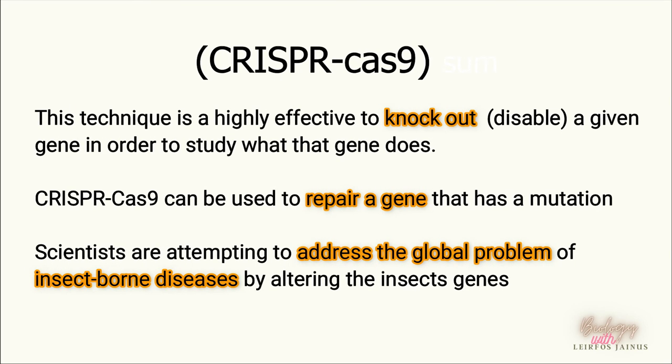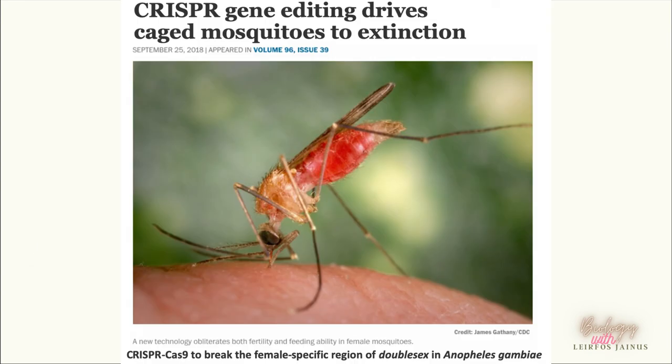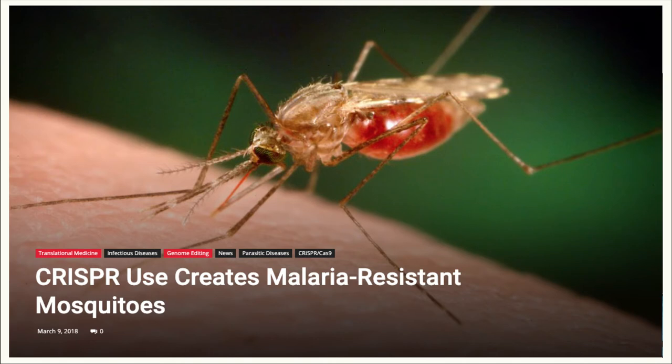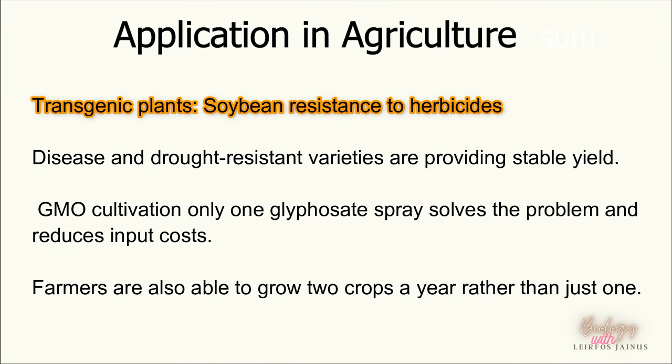Technically, CRISPR-Cas9 is highly effective at disabling genes, repairing mutated genes, or even creating new genetically modified organisms. For example, CRISPR is used to edit the genes in Anopheles mosquito species to make them infertile or malaria-resistant. CRISPR provides new hope for human beings to combat malaria disease globally.